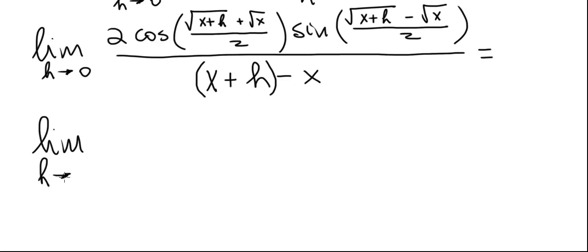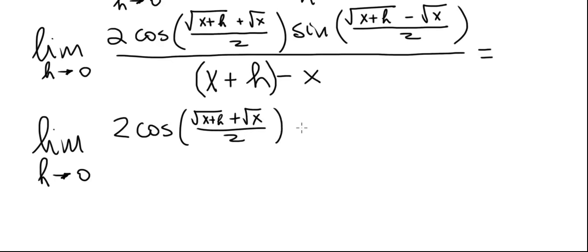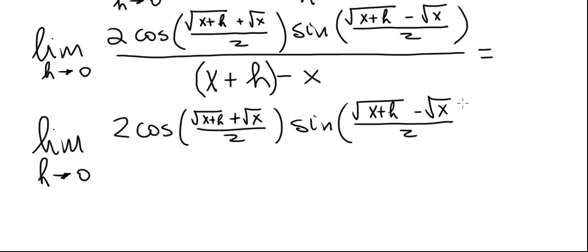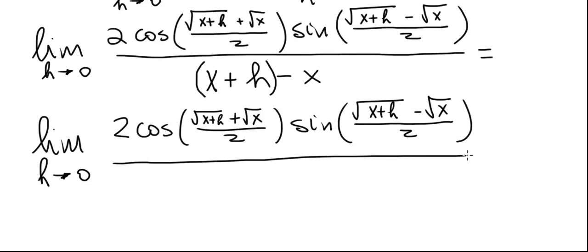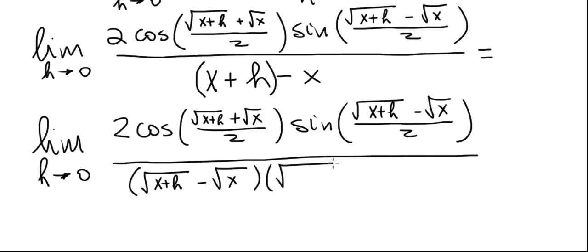This gives us the limit as h goes to zero with the numerator unchanged: twice cosine of (√(x+h) + √x)/2 times sine of (√(x+h) − √x)/2. The denominator factors as (√(x+h) − √x) times (√(x+h) + √x).